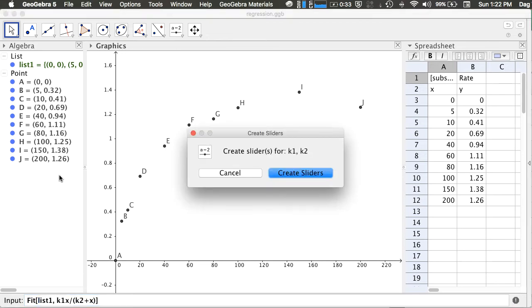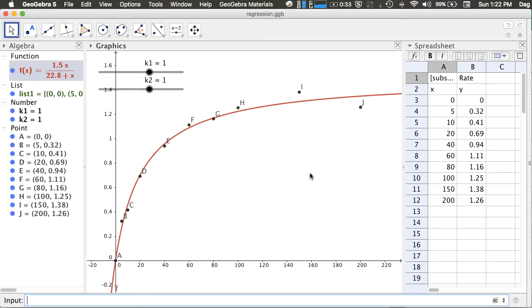GeoGebra will ask you to create sliders for k1 and k2. Never mind what they are. You just click create sliders. Boom! Now you have the regression line.